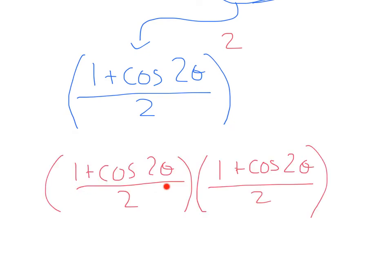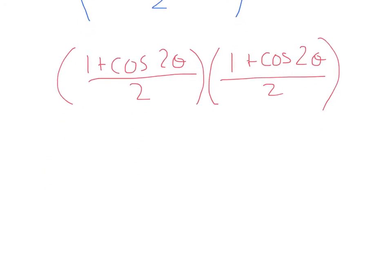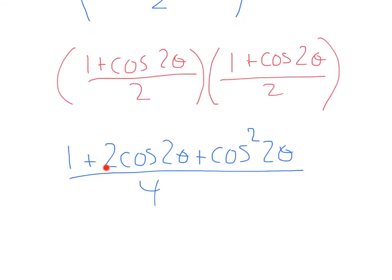Squaring that, we'll get 1 plus cosine 2 theta over 2 times 1 plus cosine 2 theta over 2. We'll need to distribute everything. That'll give us 1 plus 2 cosine 2 theta plus cosine squared 2 theta.